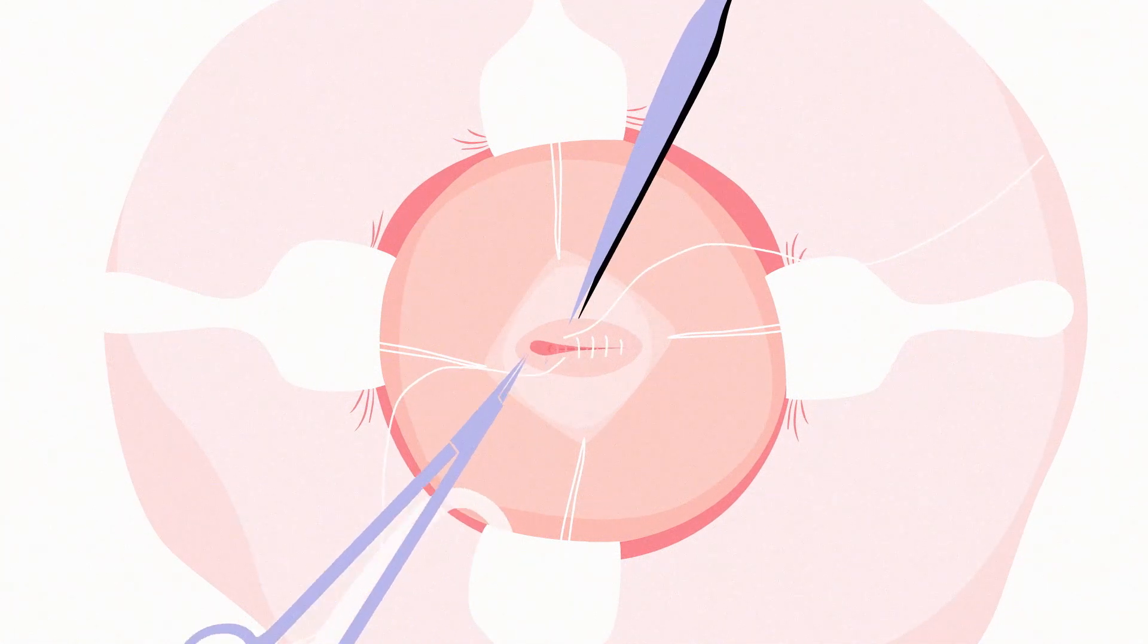The muscles and skin are then brought together and stitched closed. This protects the spinal cord and prevents further leakage of spinal fluid.